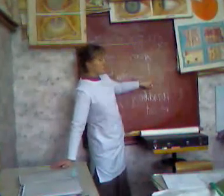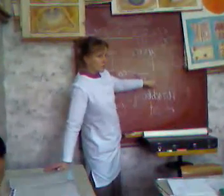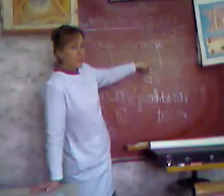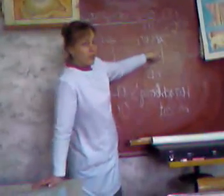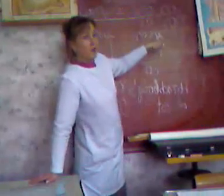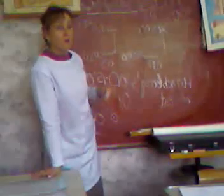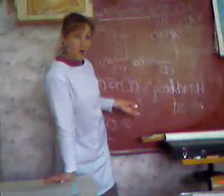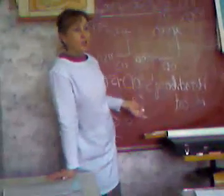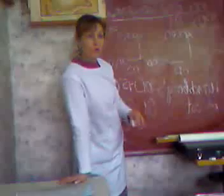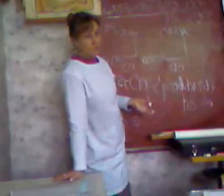Vertically, myopia is minus 5; horizontally, minus 3. If you give minus 3, there will be under-correction. If you give minus 5, there will also be under-correction. In both cases, vision will improve but not much.